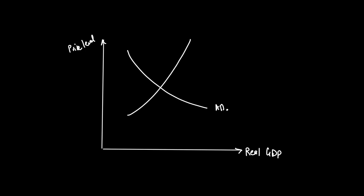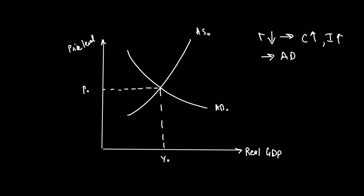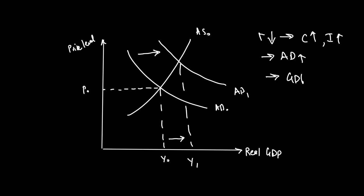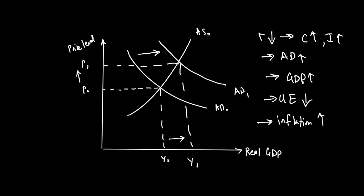Looking at the diagram: let's say AD is AD0, aggregate supply curve is AS0, the current price level is P0, and GDP is Y0. If the government reduces interest rates, consumption and investment go up, causing AD to rise. This expansionary monetary policy raises GDP and reduces unemployment, but because the price level goes up, inflation may also rise. If this rise in GDP also causes people to buy more imports, there will be a rise in the current account deficit.